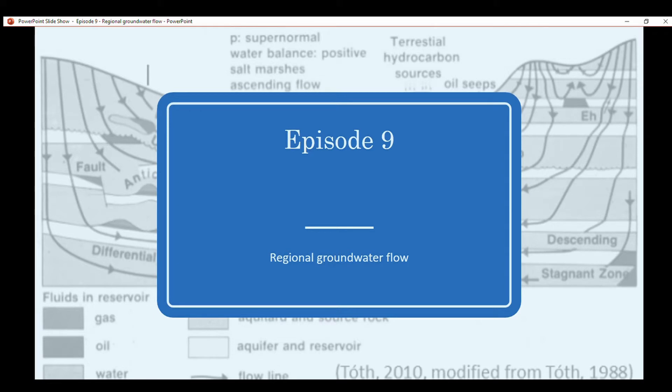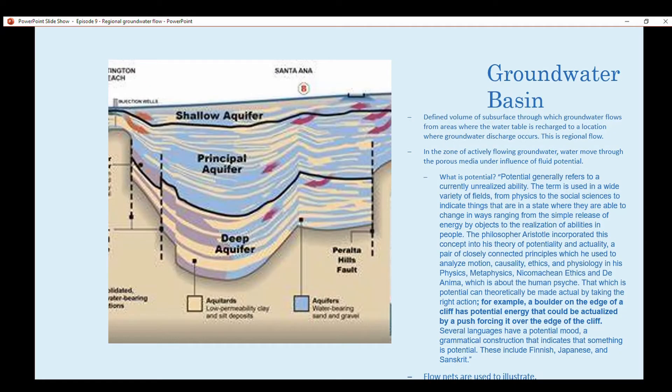When we're dealing with a groundwater basin, it's a defined volume of the subsurface through which groundwater flows from areas where the water table is recharged, such as a mountain front, to a location where the groundwater discharges, like a stream in a basin. A sedimentary basin is the best way to think about it, like a basin and range, prototypical normal faults on both sides with maybe a stream in the middle.